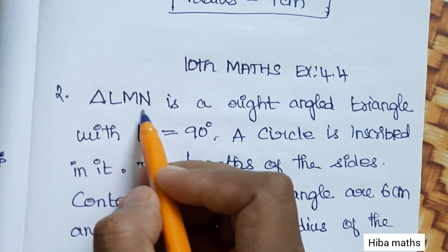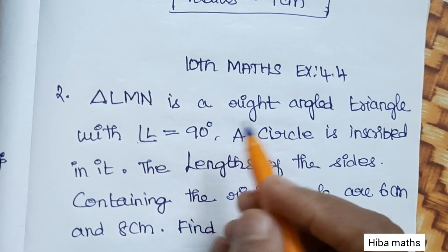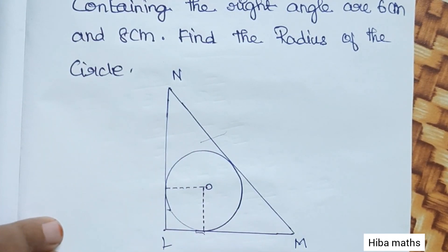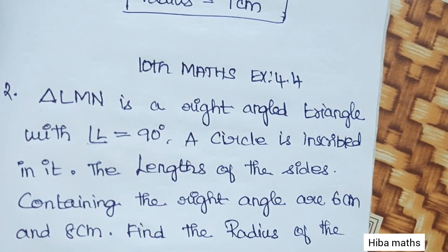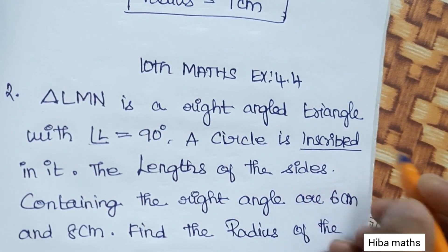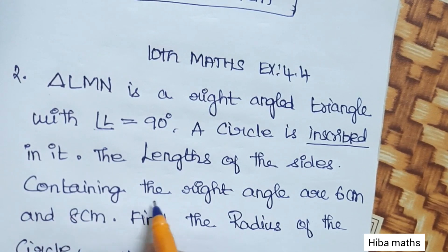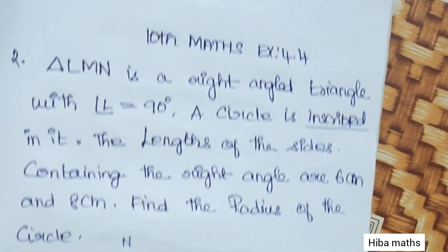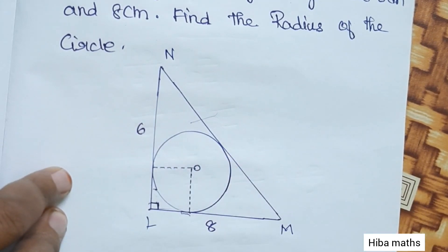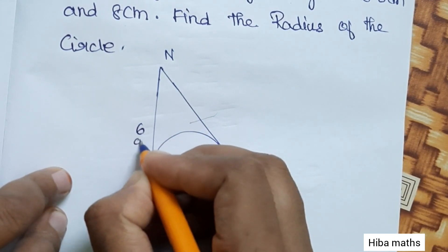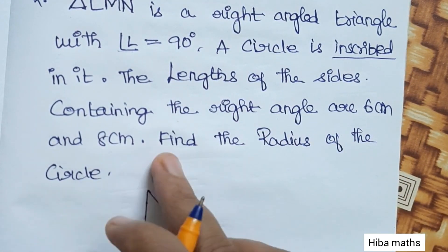Triangle LMN is a right-angled triangle with angle L equal to 90 degrees. A circle is inscribed inside the triangle. The length of the sides is 6cm and 8cm — the two sides at the right angle are 6cm and 8cm. Find the radius of the circle.